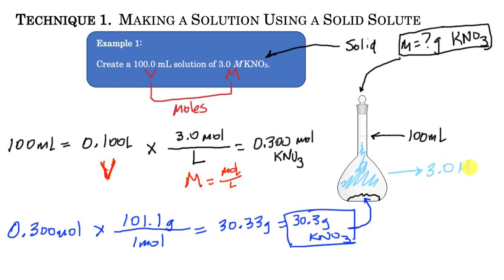The key here is focusing on moles. When I know how many moles are in the solid, adding water just suspends those particles into solution — it doesn't change the number of moles. I'm simply diluting it down until I reach the 100 mL mark. So: figure out the moles, then the mass, then finish the problem.